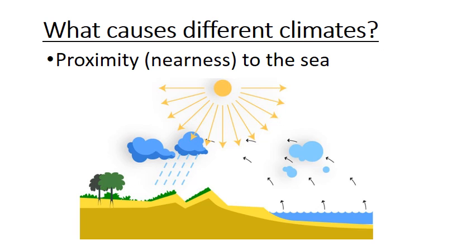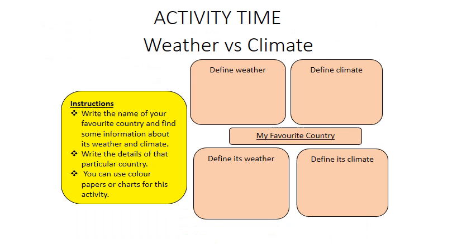Another factor causing different climates is proximity — nearness to the sea. The temperature of the oceans does not vary much from summer to winter. The sea keeps places near the coast cooler in summer and milder in winter than those in the interior of large countries. This is the basic reason for different climates near the sea.